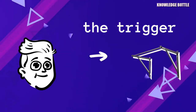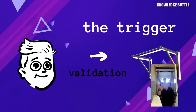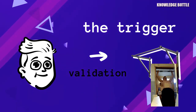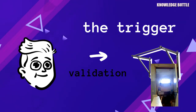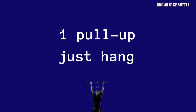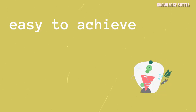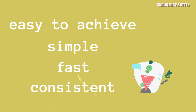Immediately after seeing this trigger, you need to validate it and do the actual pull-ups, or even just one pull-up. There needs to be no exception, otherwise there's a high risk of breaking your TAP. This is why you can simply do one pull-up or just hang from the pull-up bar. When you are just starting, your action should be something easy to achieve, simple, and fast. The trigger you pick needs to be consistent, otherwise the TAP can break.